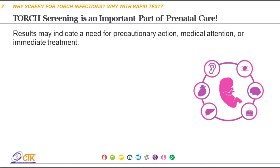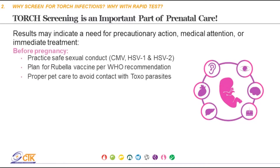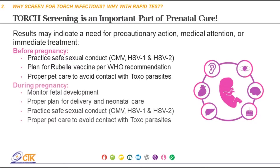Screening the high-risk category for TORCH infection is important as it allows for precautionary measures or necessary medical attention. TORCH screening before and during pregnancy provides an infection status and allows pregnant women to plan accordingly. Lifestyle precautions may include safe sex practice for CMV, HSV1, and HSV2; vaccination for rubella; or proper pet care to prevent contact with cat fecal matter in the case of Toxo.